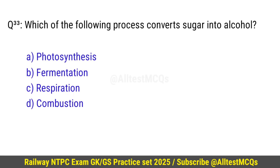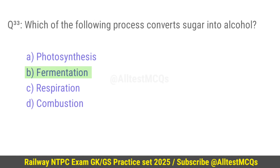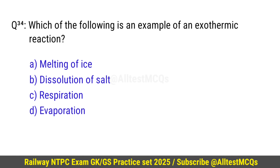Question number 33: Which of the following processes converts sugar into alcohol? Correct option is D — Fermentation. Question number 34: Which of the following is an example of an exothermic reaction? Right option is C — Respiration.